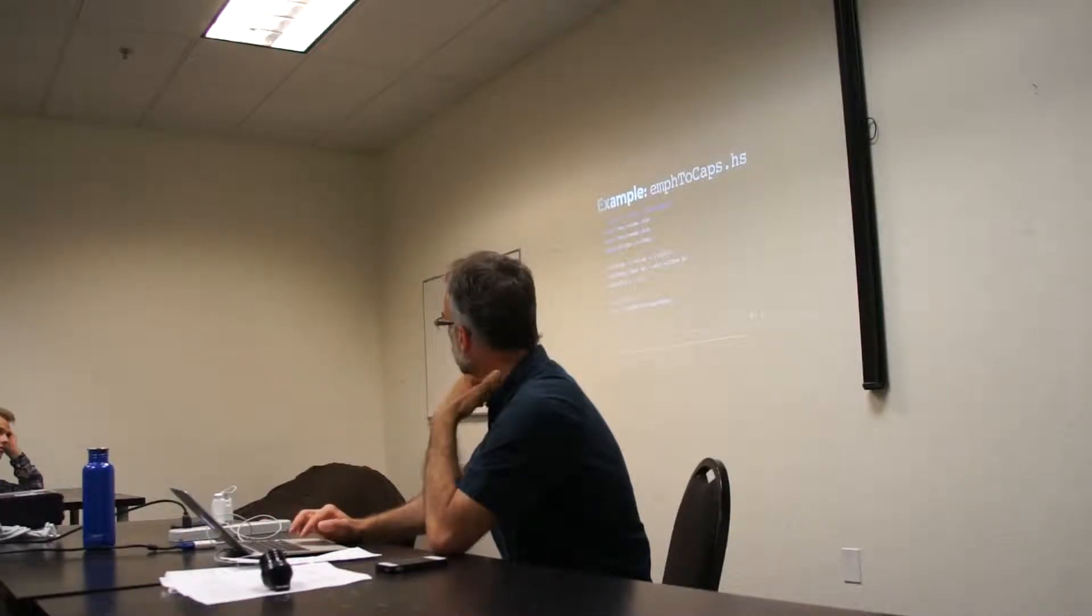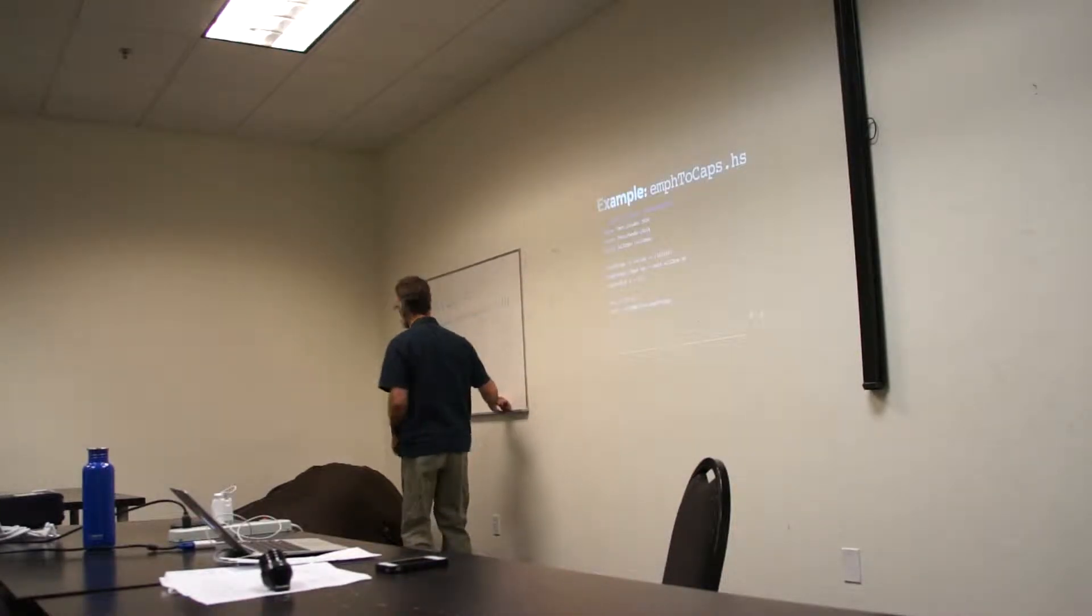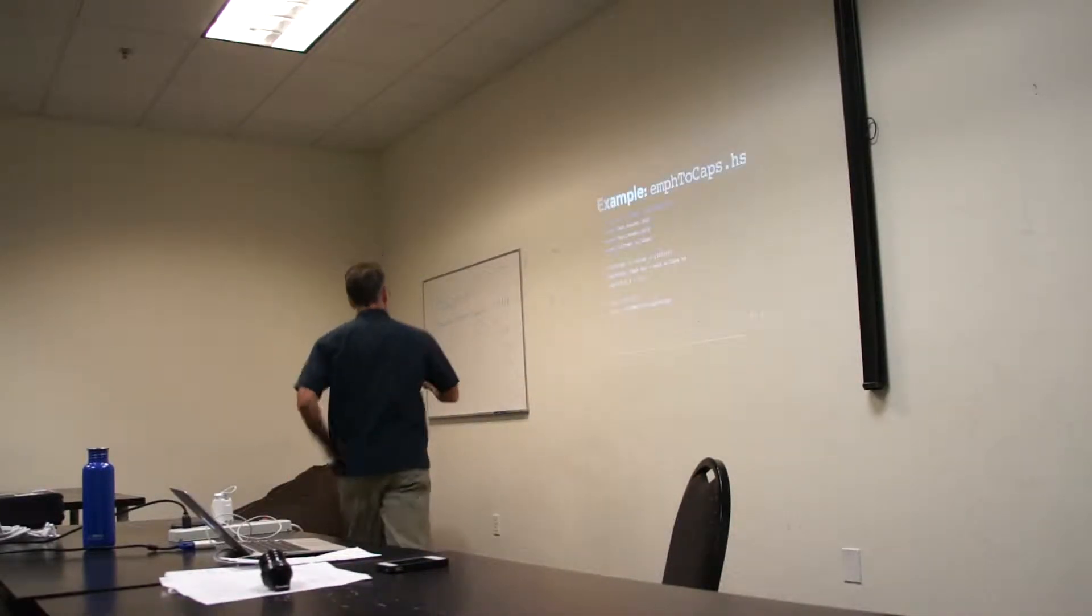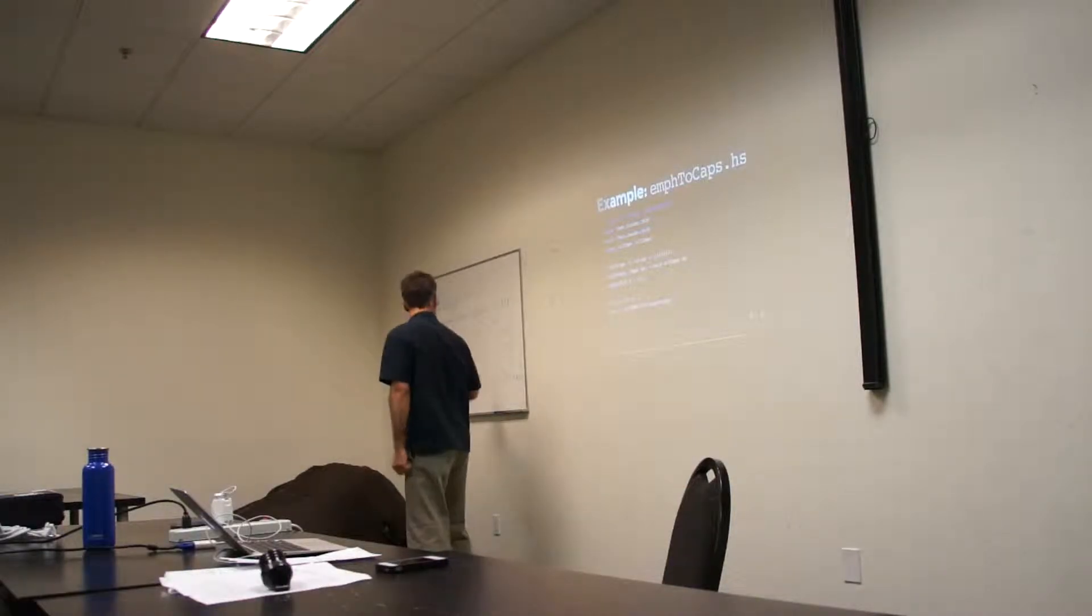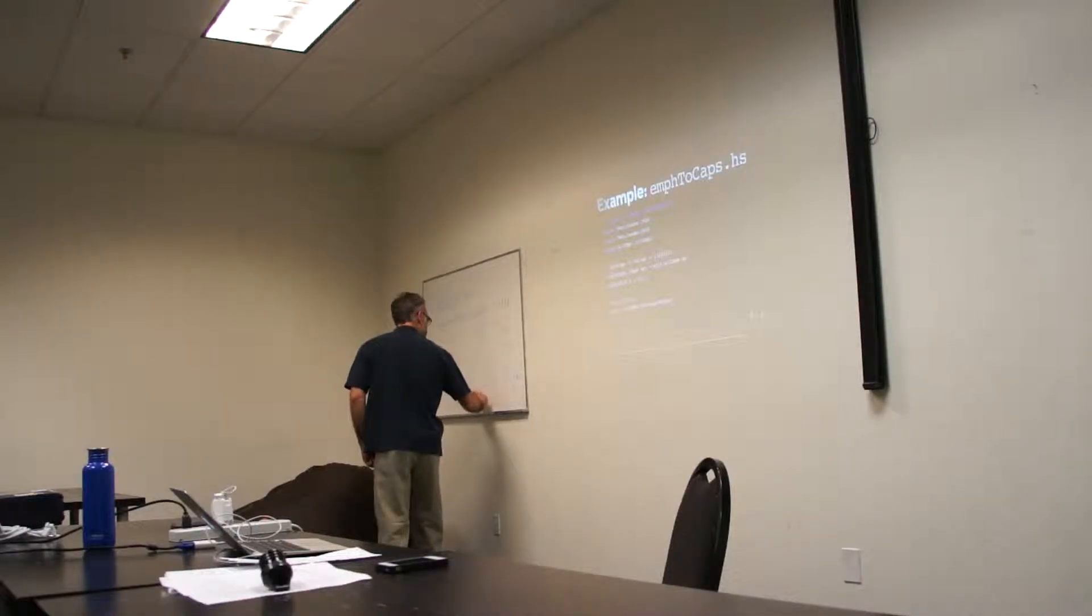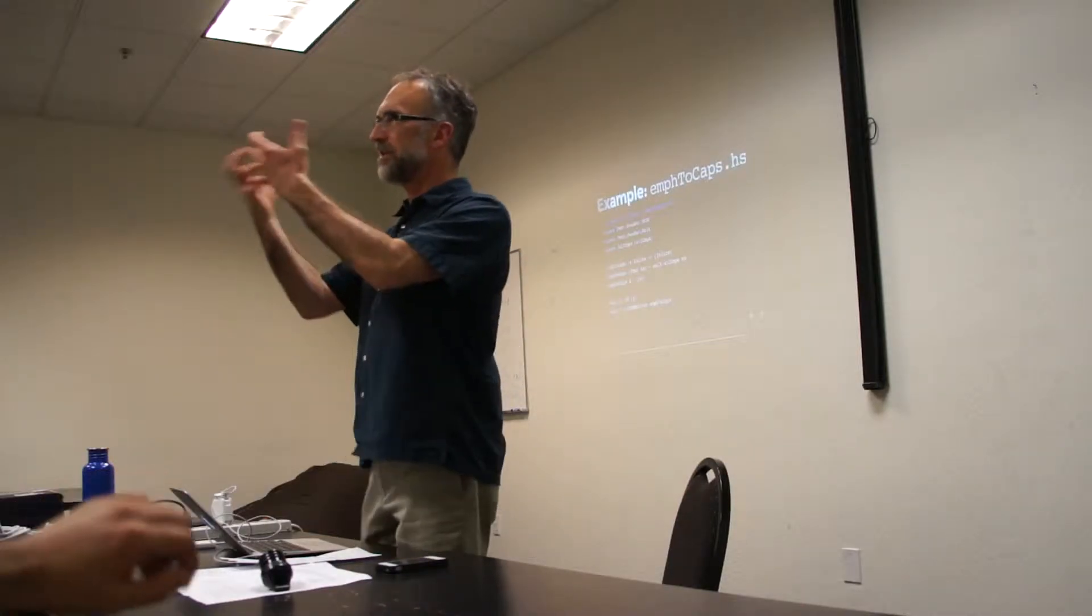So if you think about it, an emphasis, the emph inline looks like this. You've got emph, and then you've got a list of inlines, right? So what we want to do is we want to get rid of the emph part and just have the list of inlines, but we want to capitalize all of those, all the strings in those. Remember, they could be nested very deep in there. So we're going to need a function that goes from an inline, such as an emph, to a list of inlines. And toJSON filter knows how to deal with those by just concatenating.